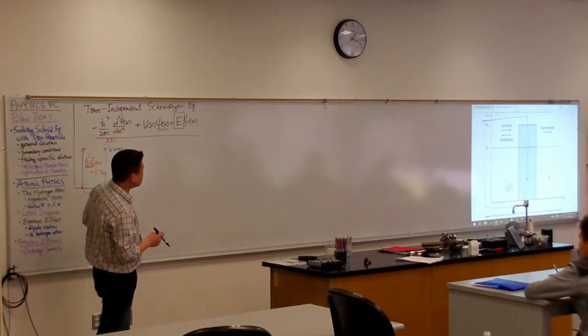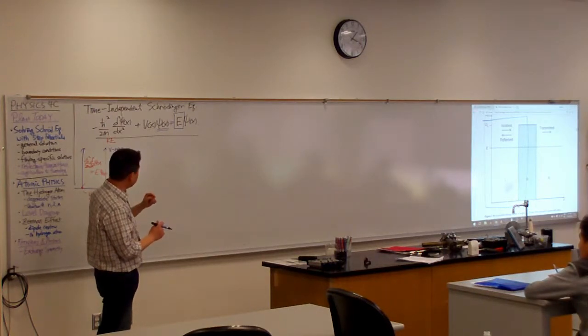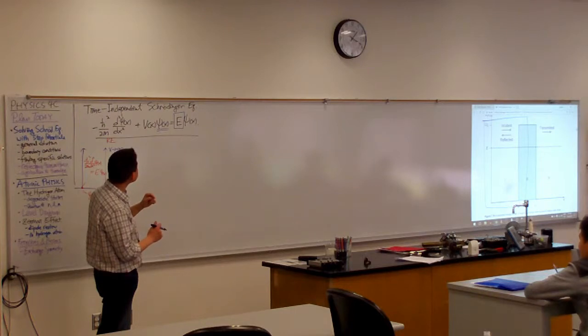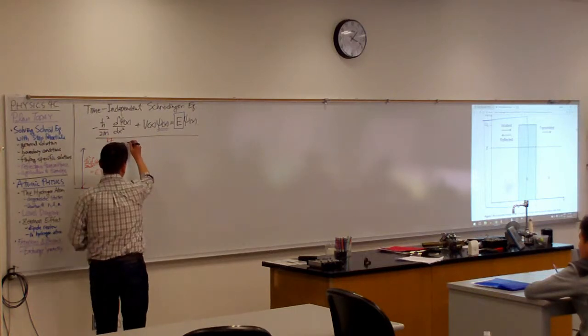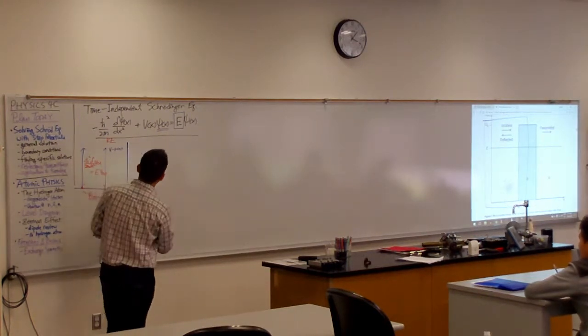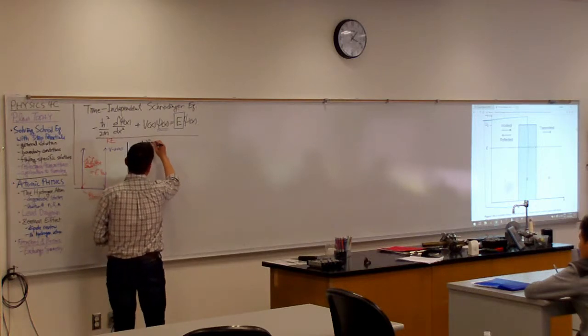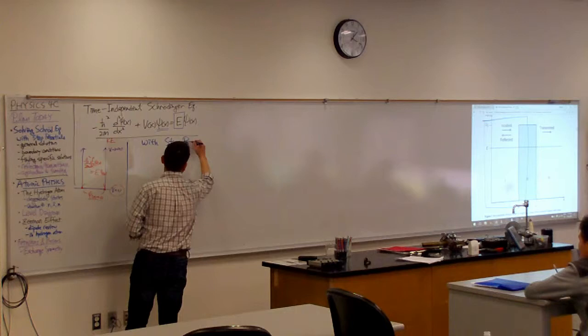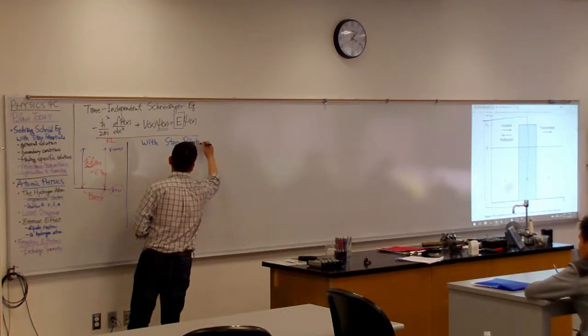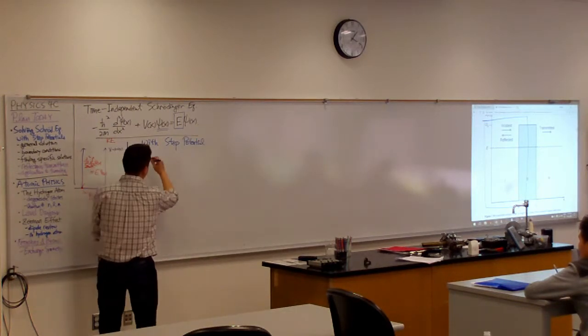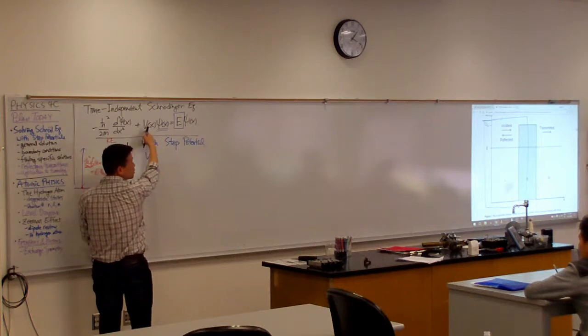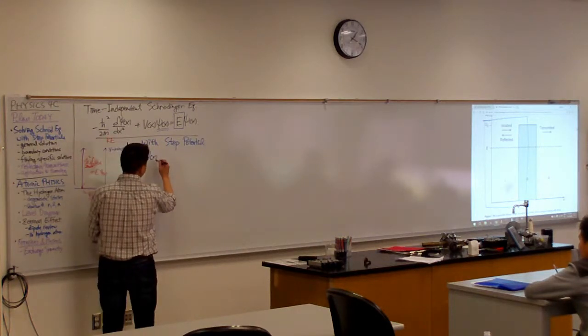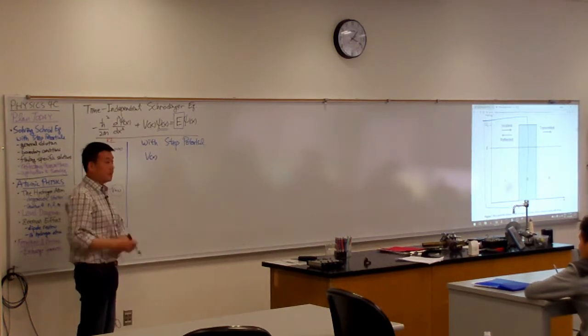And you can kind of see why. So, Schrödinger equation with step potential, meaning when you look at this potential energy function, it's a piecewise linear function. In fact, it's a piecewise linear horizontal line function.